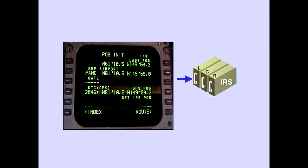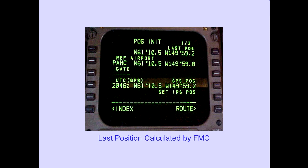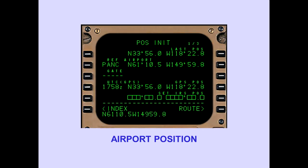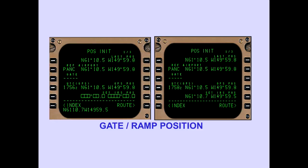Line selecting the entered position to the set IRS position line sends the position to the IRS's. This information is used as the initial position for navigation. The first line of the POS INIT page is the last position calculated by the FMC. The last known position may be entered into the set IRS position line. Entering an airport identifier displays the airport position, which may also be entered into the set IRS position line. With an airport identifier entered, gate or ramp coordinates may be manually entered into the set IRS position line.